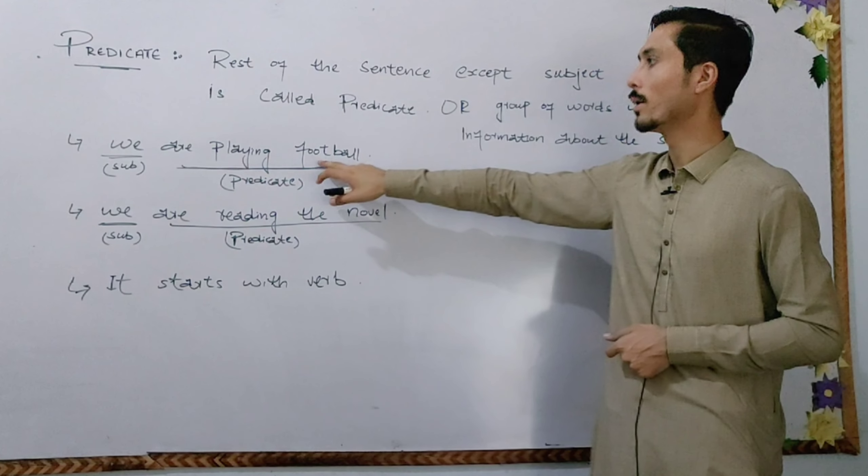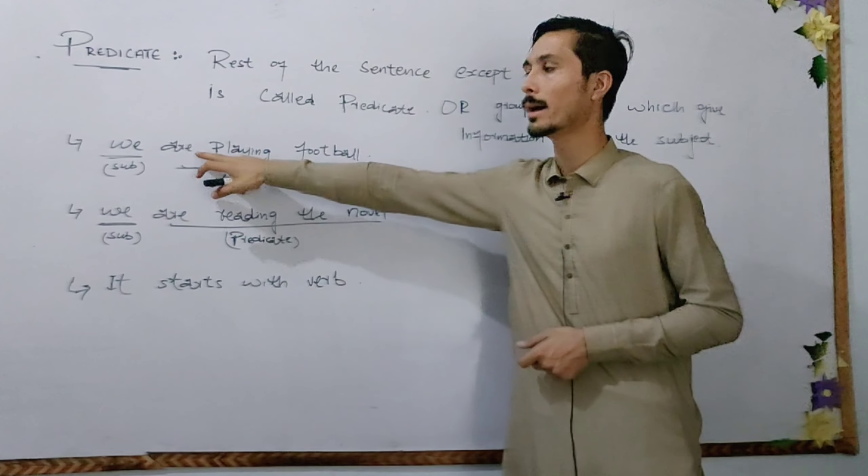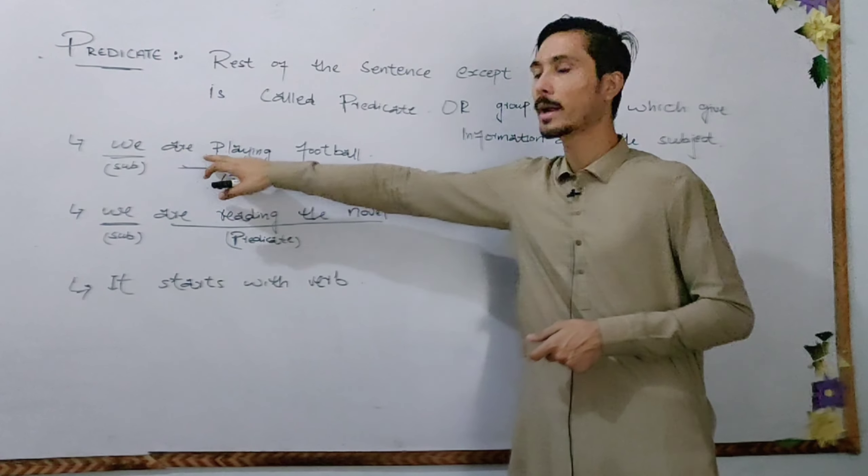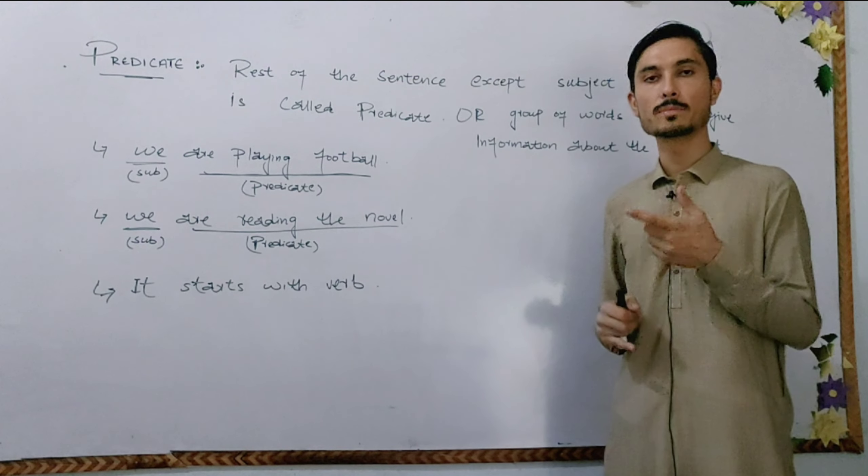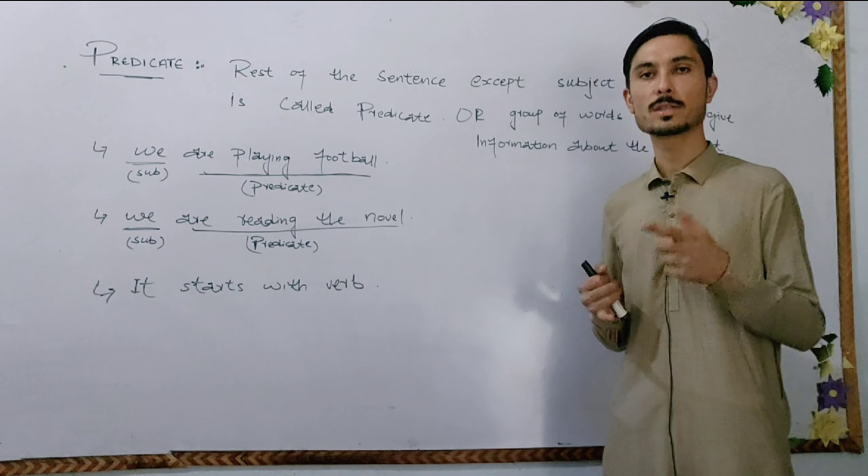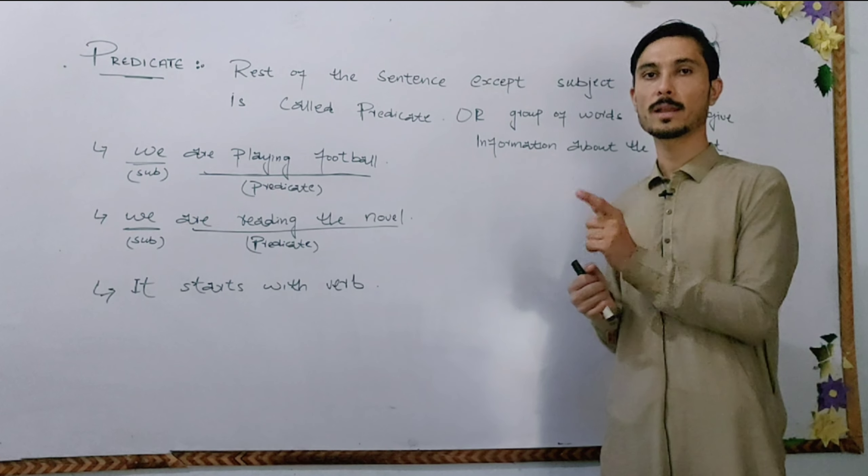Or we are playing football, so yohan par aarek word hai, yohan par predicate word ke saath start hai. Or I am taking the class, so yohan par I subject hai, and am taking the class predicate hai.